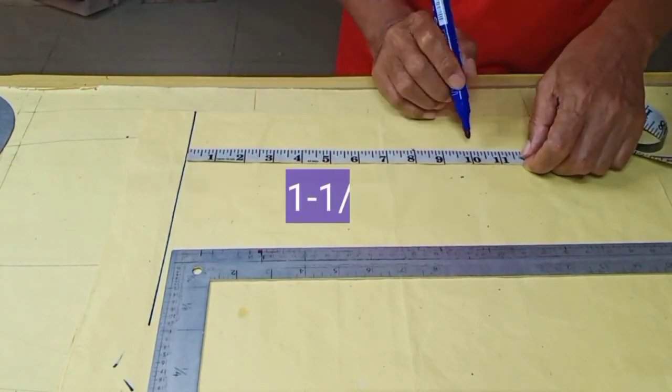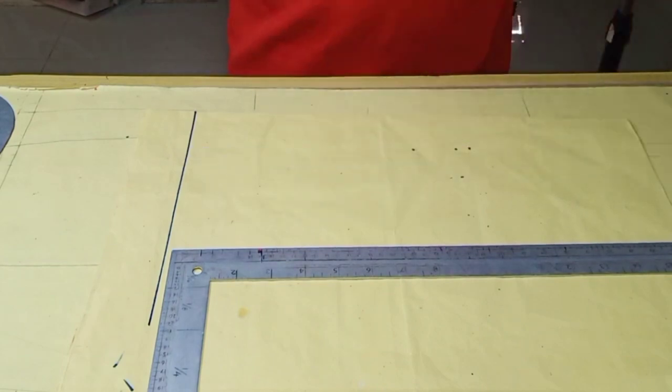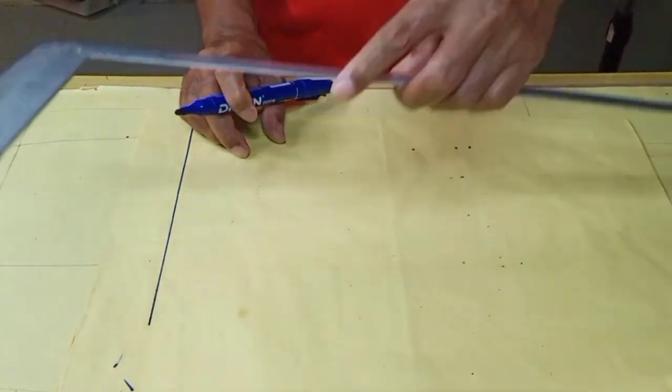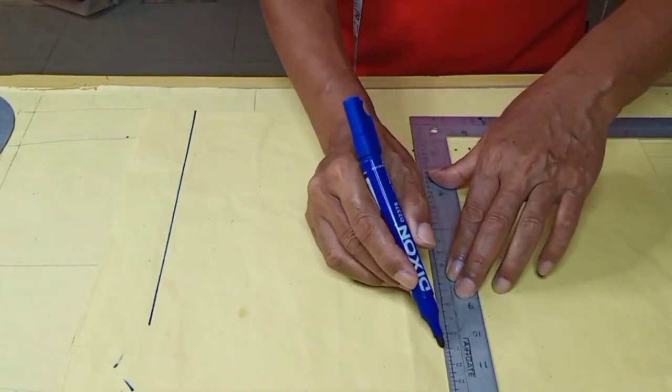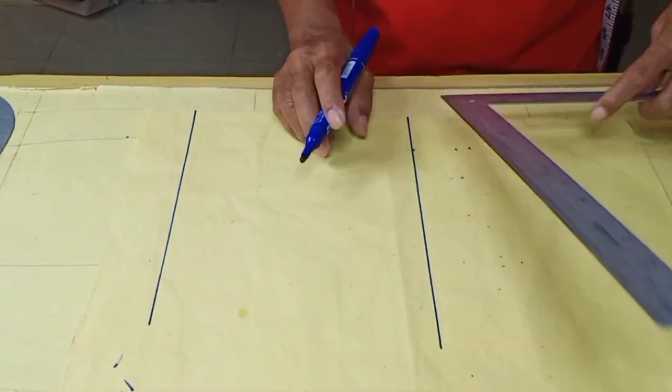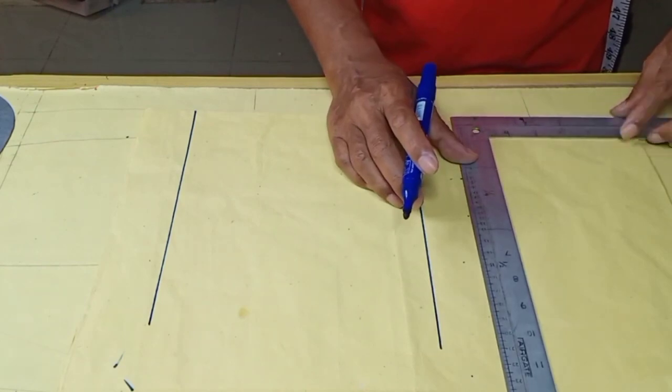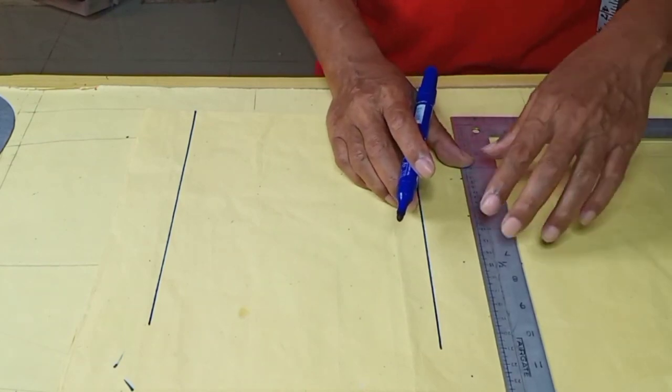Add 1 to 1.5 inches fold allowance. Shout out to all viewers in English-speaking countries. This is a re-upload video for the benefit of English-speaking viewers. Then square it out, just like this.